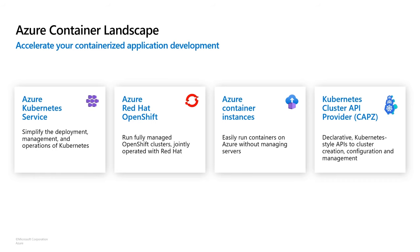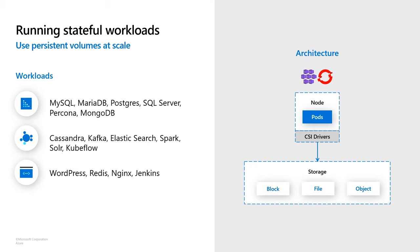Azure offers a plethora of options for you to run containers. These include Azure Kubernetes Service, Azure Red Hat OpenShift, Azure Container Instances, as well as Cluster API for custom Kubernetes deployments. Over the last few years, we are seeing a significant increase in stateful workloads run on Kubernetes at production scale on Azure. These include databases like MongoDB and Postgres, big data applications like Cassandra, machine learning workloads like Apache Spark or Kubeflow, and other applications like Kafka, CMS technology, CI/CD systems, and so on.